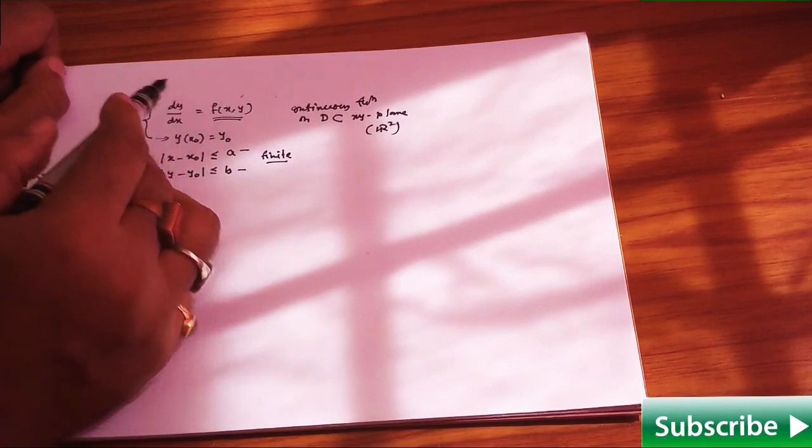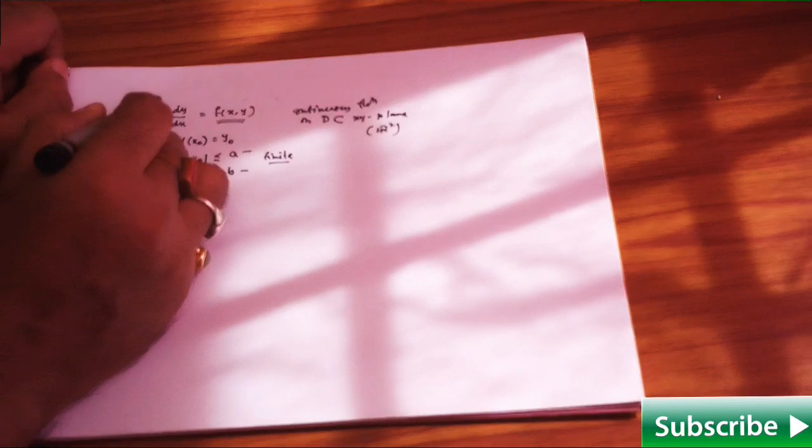This together implies an initial value problem, and basically they ask in the problem whether the solution exists or not. If it exists, then what will be the interval of existence? That is our ultimate goal. We will solve some problems and you will get the whole flavor of this result.